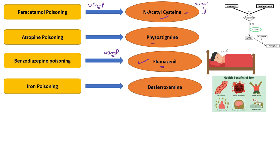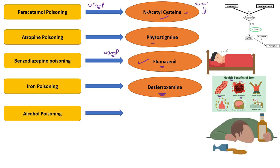The drug of choice for iron poisoning is deferoxamine. Iron has many health benefits — it treats anemia, increases hemoglobin levels, reduces fatigue, and has many other uses. But if the iron level is excessively high inside the body, it causes toxicity. For that toxicity, we give deferoxamine.